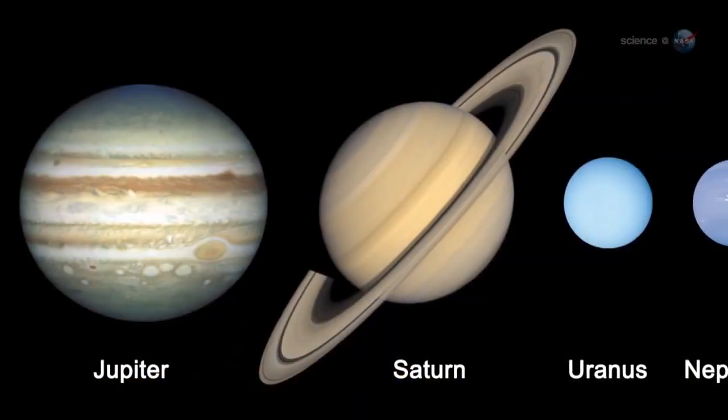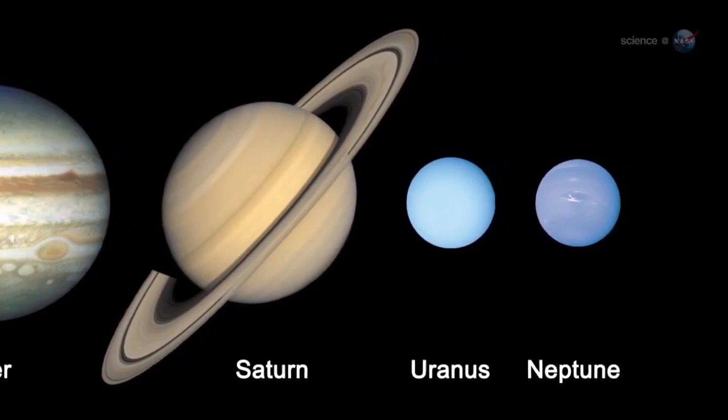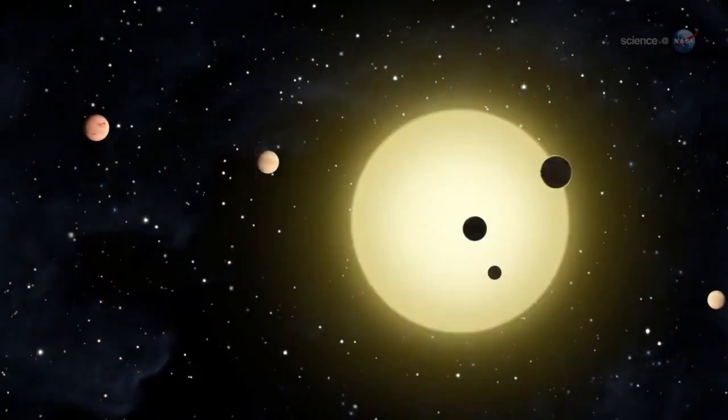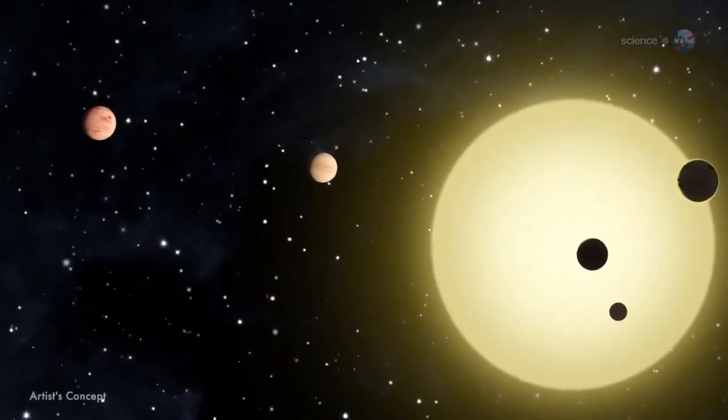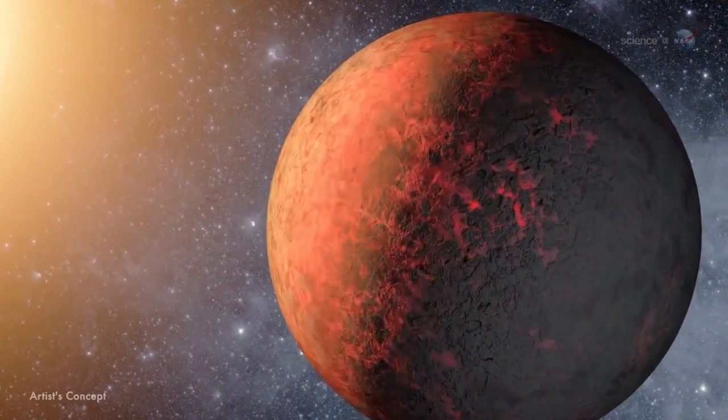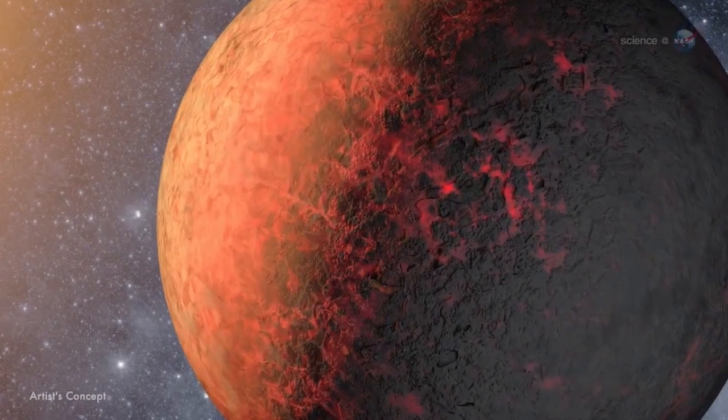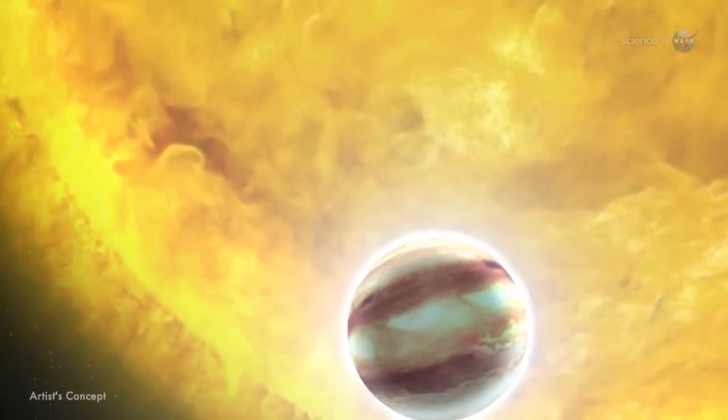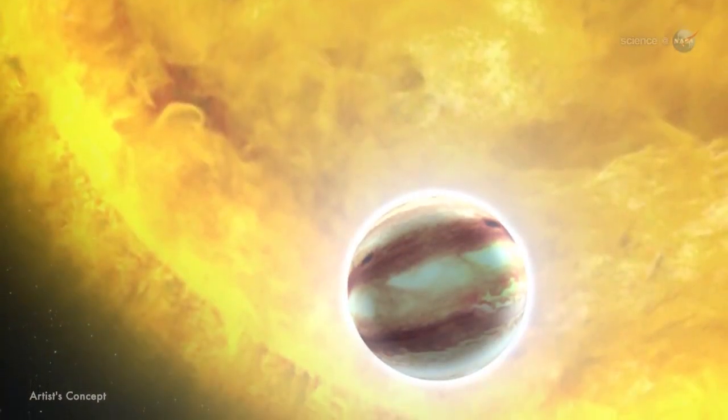Unlike the giant planets of our own solar system, which remain at a safe distance from the Sun, these worlds are reckless visitors to their parent stars. They speed around in orbits a fraction the size of Mercury's, blasted on just one side by starlight hundreds of times more intense than the gentle heating experienced by Jupiter here at home.